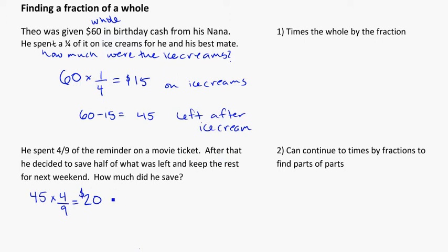After that, he decided to save half of what was left and keep the rest for the next weekend. How much did he save? So first off, $20 on the movie. And then we need to think, if he spent $20 out of the 45, so that's 45 minus 20, he's now left with $25.